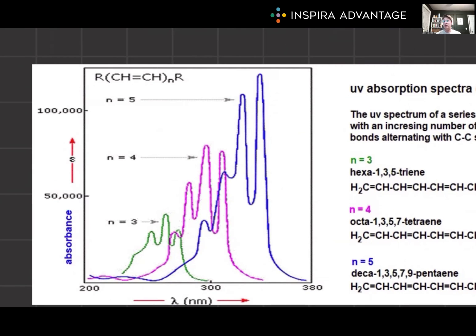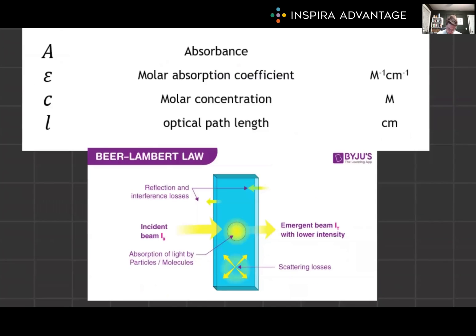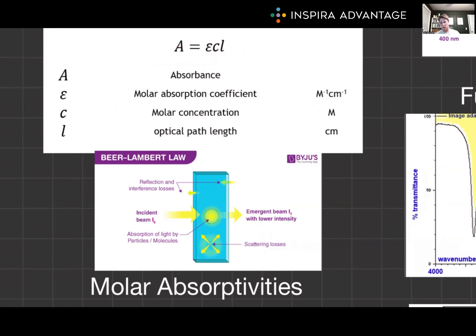For the MCAT, you need to understand how to apply Beer-Lambert's Law to UV-Vis spectroscopy. The law states that absorbance, A, of a solution is directly proportional to the concentration of the absorbing species and the path length, L — or sometimes B — of the sample, with the proportionality constant being the molar absorptivity, epsilon. It's just a constant that's different for every single chemical compound. So our equation is simply A equals epsilon times C times L — a super easy equation to use.